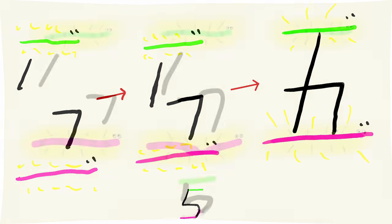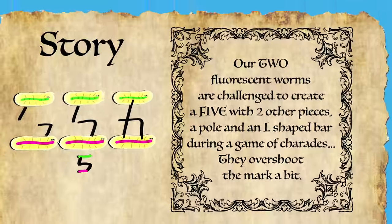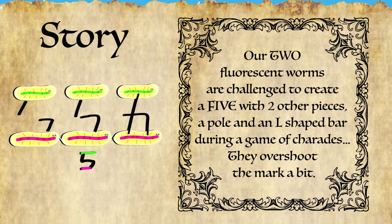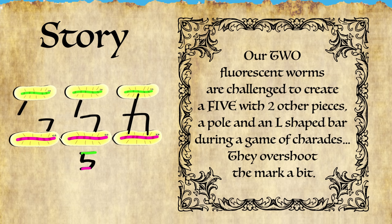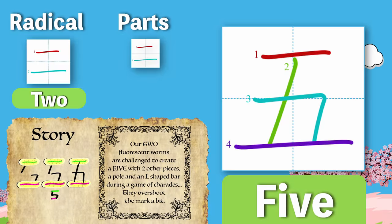Because this kanji is kind of an oddball, I've blended the story with somewhat of a pictograph. Here it is. Our two fluorescent worms are challenged to create a five with two other pieces, a pole and an L-shaped bar during a game of charades. They overshoot the mark a bit. Can you see that? There's an Arabic numeral five there, but then the worms go a little too far, and we get the kanji for five instead. Remember that now is a great time to pause the video and really try to imagine that story, or to create a story of your own that will help you remember it even better.